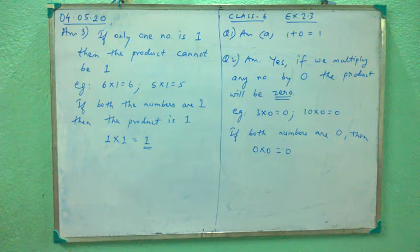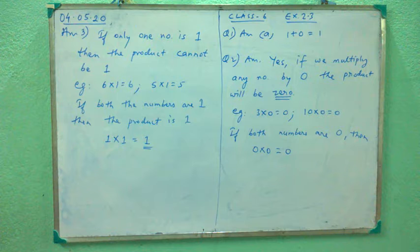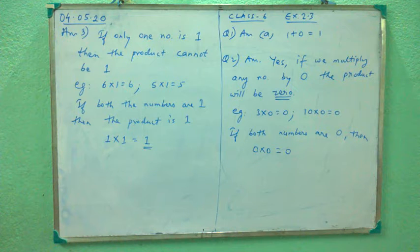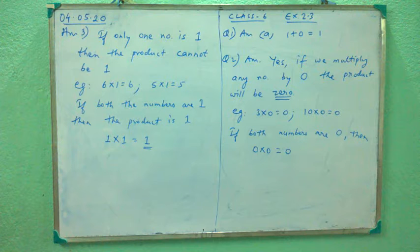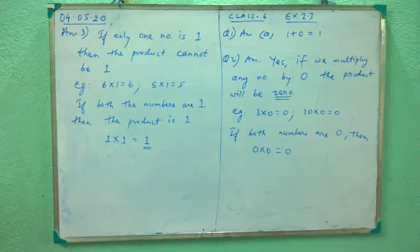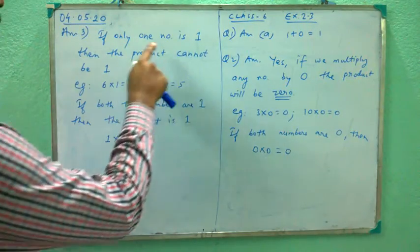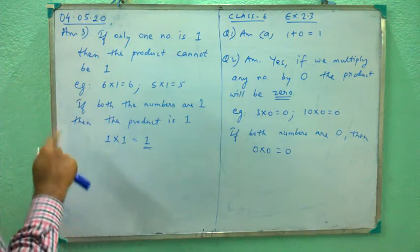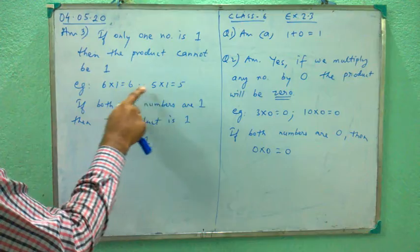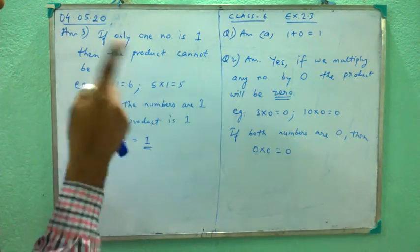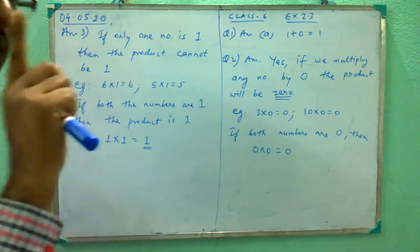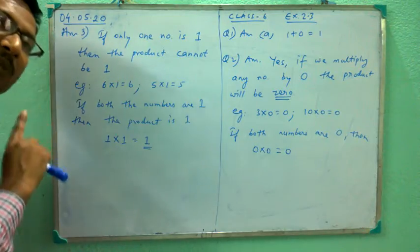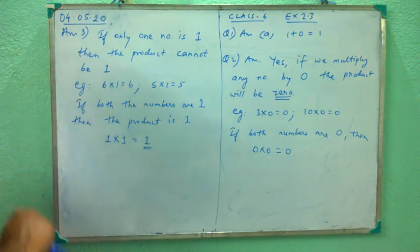Question 3: If the product of 2 whole numbers is 1, can we say that 1 or both of them will be 1? If only 1 number is 1, the product cannot be 1. For example, 6 into 1 is 6, 5 into 1 is 5. If both numbers are 1, then the product is 1. So answer: if both the numbers are 1, then the product is 1.